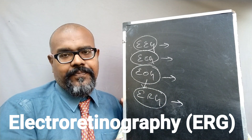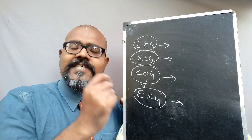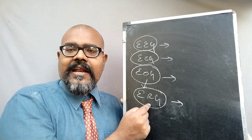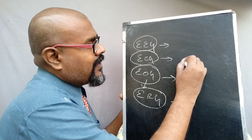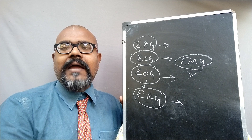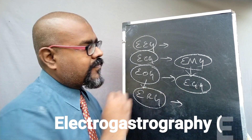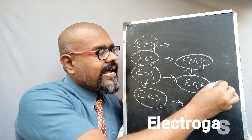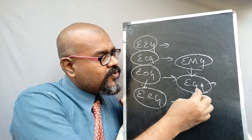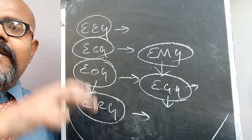ERG is nothing but electro-retinogram. The retina is a layer present in the eye. If you want to study the normal and abnormal range of the retinal signal, we can acquire the electrical signal of the retina — that is called ERG, electro-retinogram. Then EMG — electro-myogram — the electrical muscular activity can be measured using EMG. Then EGG — electro-gastrogram — this signal allows us to understand the electrical activity of the gastro-intestinal tract.